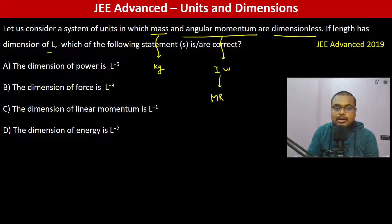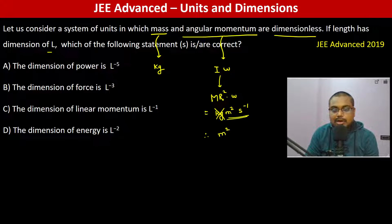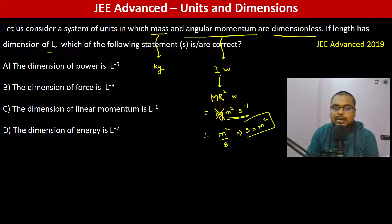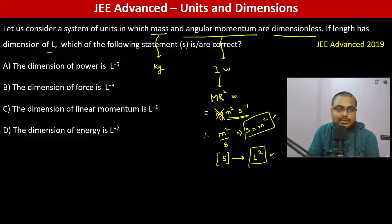Angular momentum is m·r²·omega, which is radian per second, so this is kg·m²/s. Since this is dimensionless, kg is dimensionless — remove kg. Now meter²/second is also dimensionless, so second has the dimension of meter², i.e., L². So time has a dimension of L².